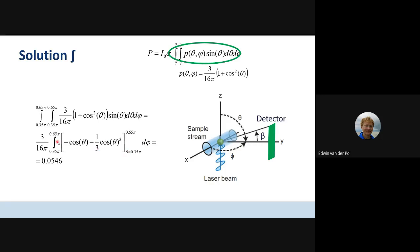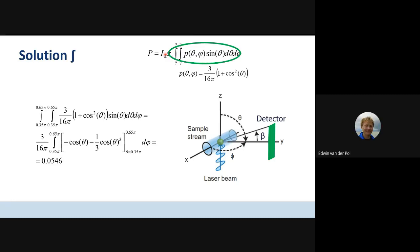Filling out the boundaries and solving the integral over phi, which is not in the equation, I found 0.0546. Did you calculate the solution of the integral? Perhaps you didn't, because it's just an in-between answer. Did you find the same? I got the same. Somebody got something else? I also got the same.